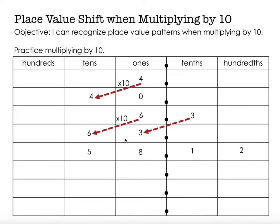Our next number: we read the digits to the left like usual, so that's 58, then we say "and" for the decimal point, then we read the digits to the right just like we would if they were to the left — that's 12 — but we label it with the place value name of the last digit. So that would be 58 and 12 hundredths. Say it with me please: 58 and 12 hundredths.